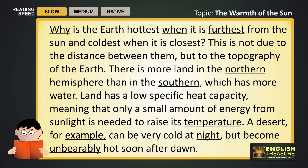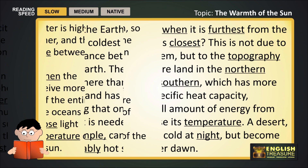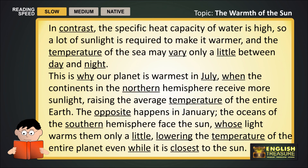A desert, for example, can be very cold at night, but become unbearably hot soon after dawn. In contrast, the specific heat capacity of water is high, so a lot of sunlight is required to make it warmer, and the temperature of the sea may vary only a little between day and night. This is why our planet is warmest in July, when the continents in the northern hemisphere receive more sunlight, raising the average temperature of the entire earth. The opposite happens in January. The oceans of the southern hemisphere face the sun, whose light warms them only a little, lowering the temperature of the entire planet, even while it is closest to the sun.